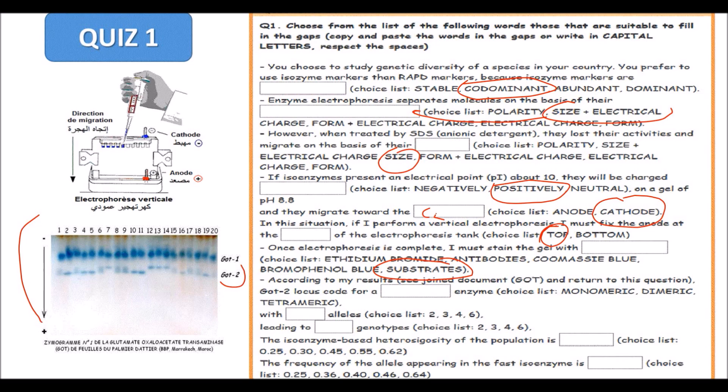According to my research, GOT-2 locus codes for an enzyme which is monomeric, dimeric, or tetrameric. According to these results, regarding these results - one band and three banded patterns - we can say that the enzyme has a structure which is dimeric. It is dimeric - two subunits. With how many alleles? Just one and three band pattern, that is two alleles, only two alleles, which could be allele A and allele B in the locus GOT-2.